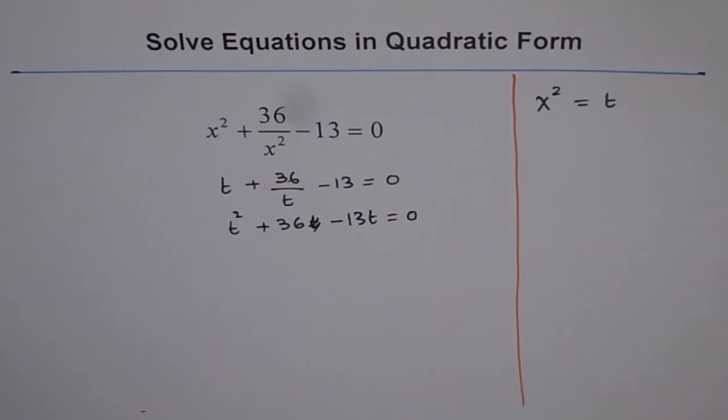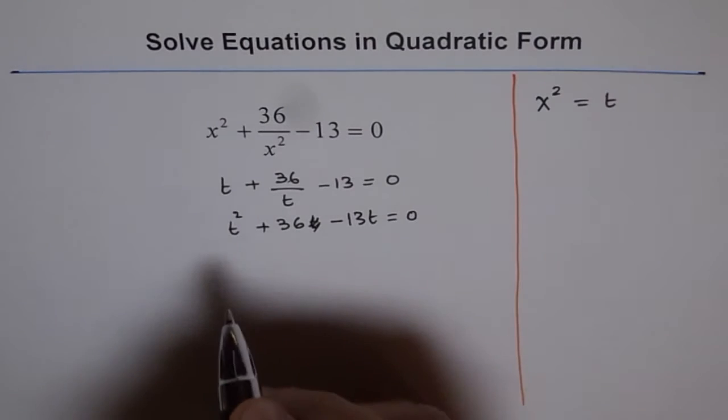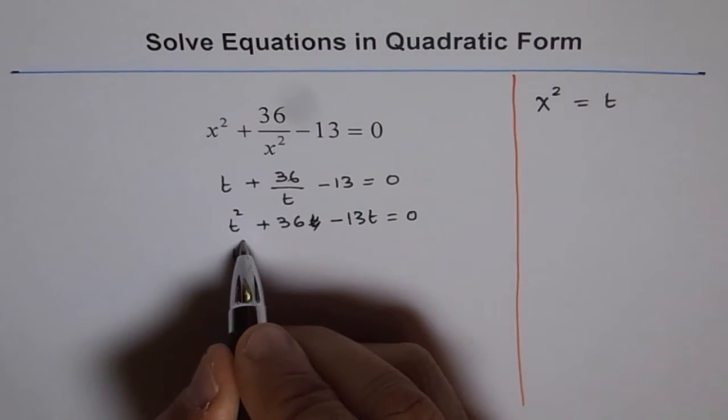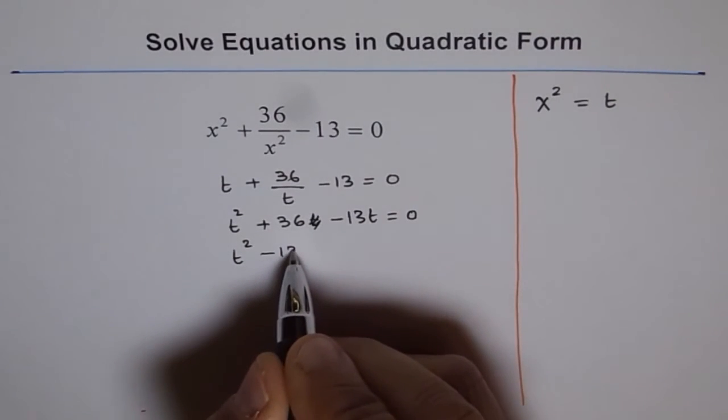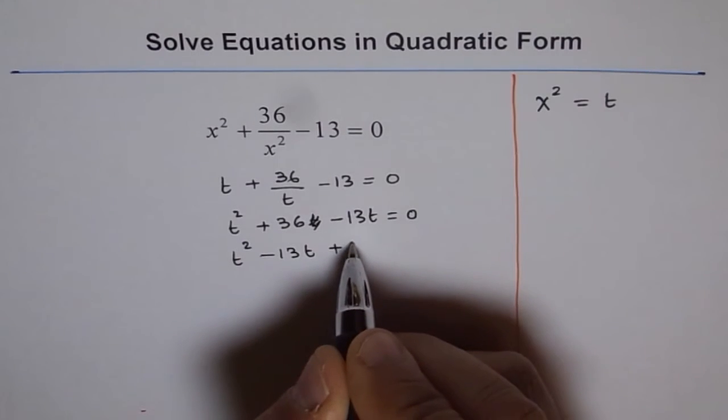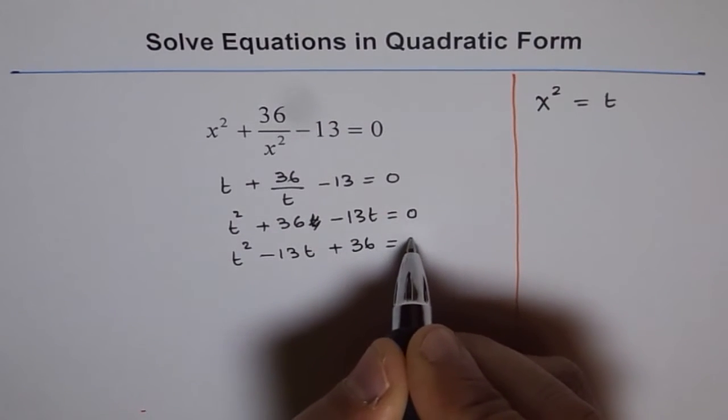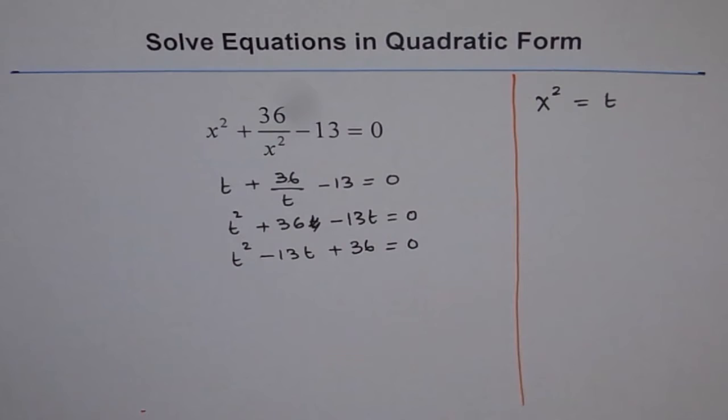Well, that looks like a quadratic equation. Let me rearrange it. If I do so, I get t squared minus 13t plus 36 equals 0. Perfect. And that is definitely a quadratic equation with three terms.